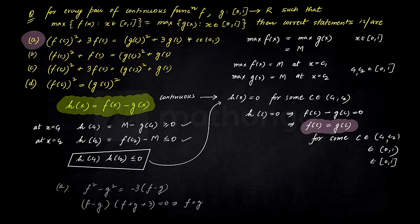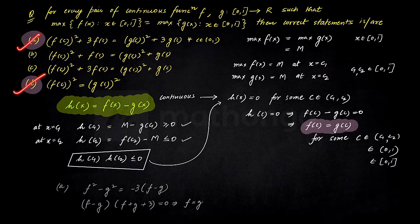And one is very very evident. Agar aap notice karo D option toh bol raha hai ya toh f(c) equal to g(c) or f(c) is equal to minus g(c). So one of the options that is correct. If we see the remaining two options, we will not get f(c) is equal to g(c) here and similarly here as well. So the two options which are correct is these two basically.